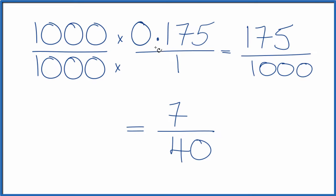And we'll have converted our decimal here, 0.175, to a fraction in simplest terms. 0.175, the decimal, equals 7 fortieths, the fraction.